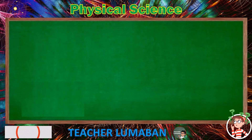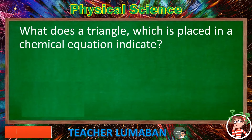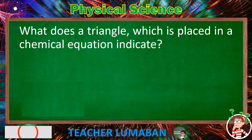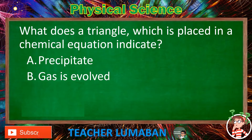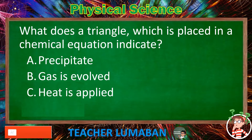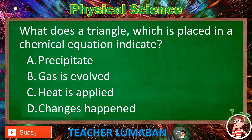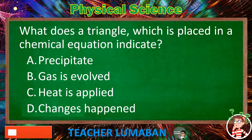What does a triangle placed in a chemical equation indicate? Letter A: precipitate. Letter B: gas is evolved. Letter C: heat is applied. Letter D: changes happened. Choose the suitable answer based on the given choices in 5 seconds.